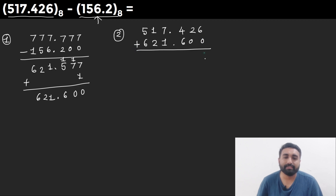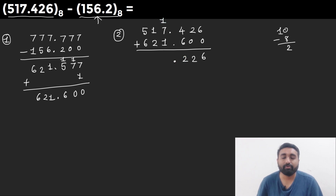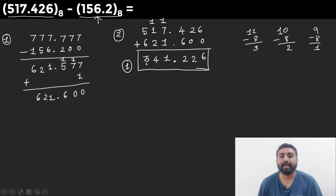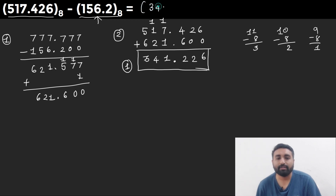Performing the addition: 6 plus 0 = 6, 2 plus 0 = 2, 6 plus 4 = 10, subtract 8 gives 2 with carry 1. 7 plus 1 plus 1 (carry) = 9, subtract 8 gives 1 with carry 1. Next digit gives 4. 5 plus 6 = 11, subtract 8 gives 3 with carry 1. We get a carry of 1, meaning the answer is positive. We ignore the carry, so the final answer is 361.22.